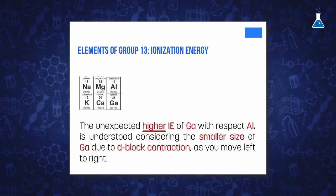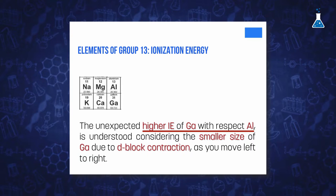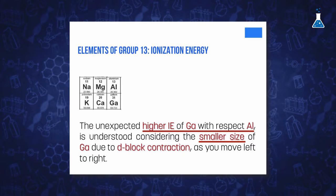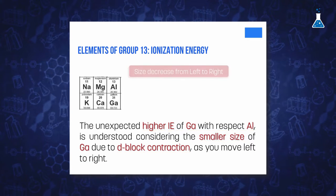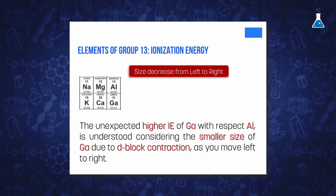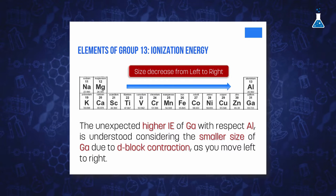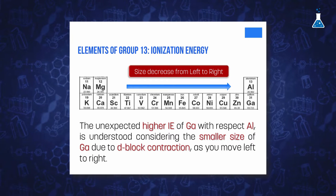The higher value of the ionization energy of Gallium, with respect to Aluminium, can be understood by examining its smaller atomic size. This decreasing size can be explained by the d-block contraction as you move from left to right in a row. As we move along the period, the inner electrons do not completely shield the extra charge in the nucleus, so the effective nuclear charge felt by the electrons increases and a contraction in size occurs.